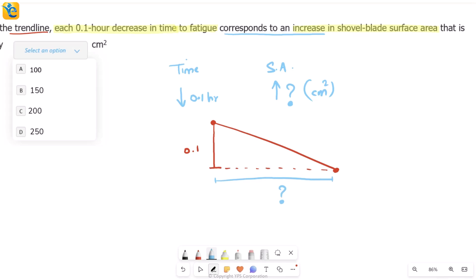There's one point and another point. Between these two, the time has dropped by 0.1, so I want to see: as time has dropped by 0.1, how much has been the increase in surface area? I'll read two points on this line where the difference between the time is 0.1 and see the difference between the x values, the surface areas.